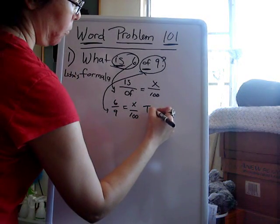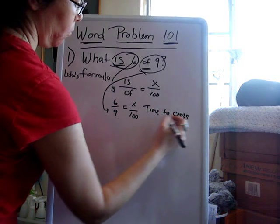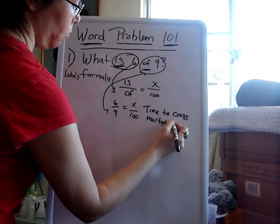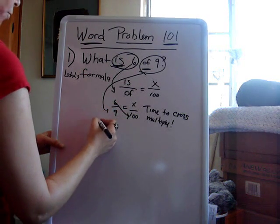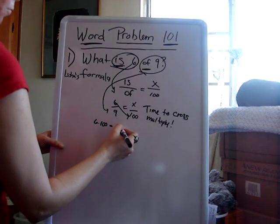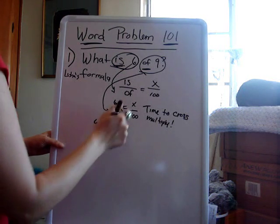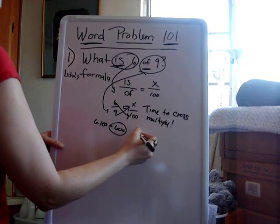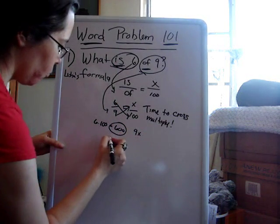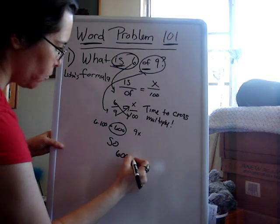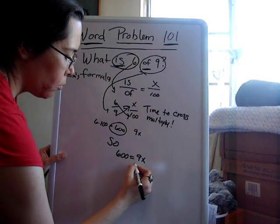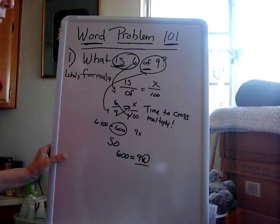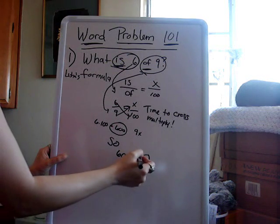Notice that I wrote equals x over 100. Now you have to cross multiply. You cross from the top to the bottom. Do six times 100, and that is 600. And now cross multiply: nine times x equals 9x. So now it's 600 equals 9x. We have to figure out what x is. Since 9 and x are multiplied, we do the opposite and divide by 9.